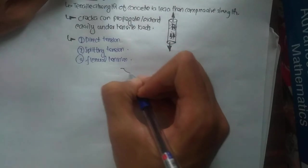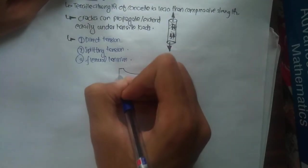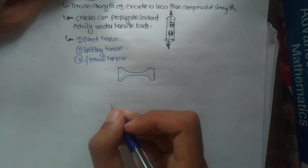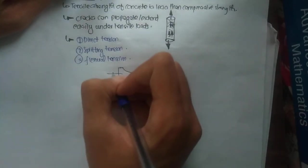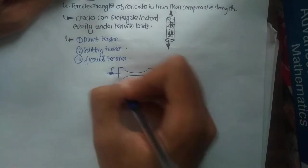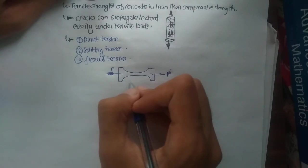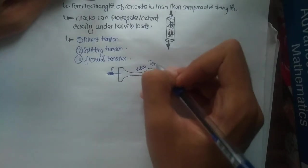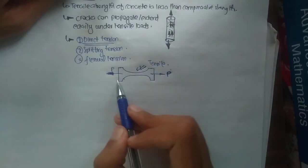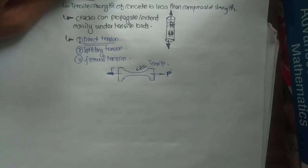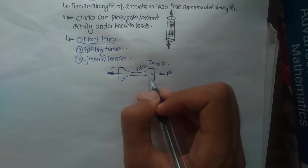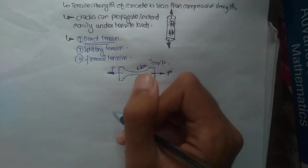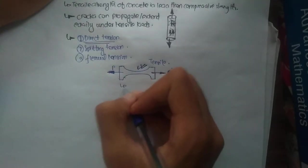For direct tension, a diagram of a concrete specimen is drawn and tensile forces are applied at both ends. The amount of force at which the concrete specimen fails is the measure of its tensile strength. A concrete specimen is taken, gripped at both ends, and the point at which the concrete fails gives the value of its tensile strength. However, this method is not used.